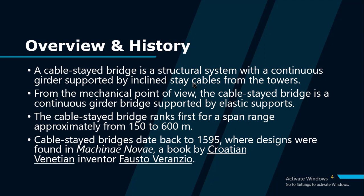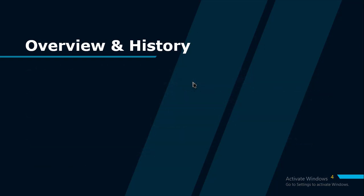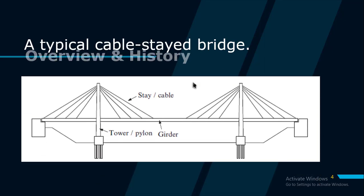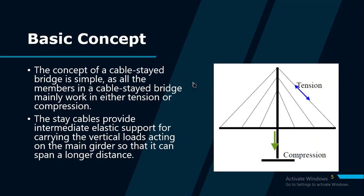Early cable-stayed bridges failed because it wasn't possible to tension the stays, and they would become slack under various load conditions. A typical cable-stayed bridge has three main components: the tower, stay cables, and girder. The stay bridge is simple as all the members mainly work in either tension or compression.